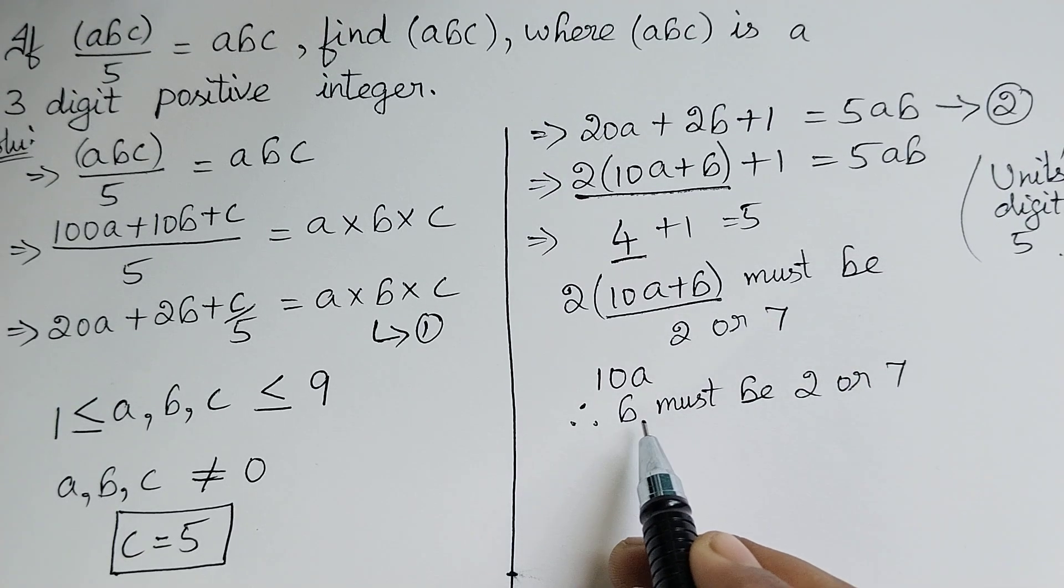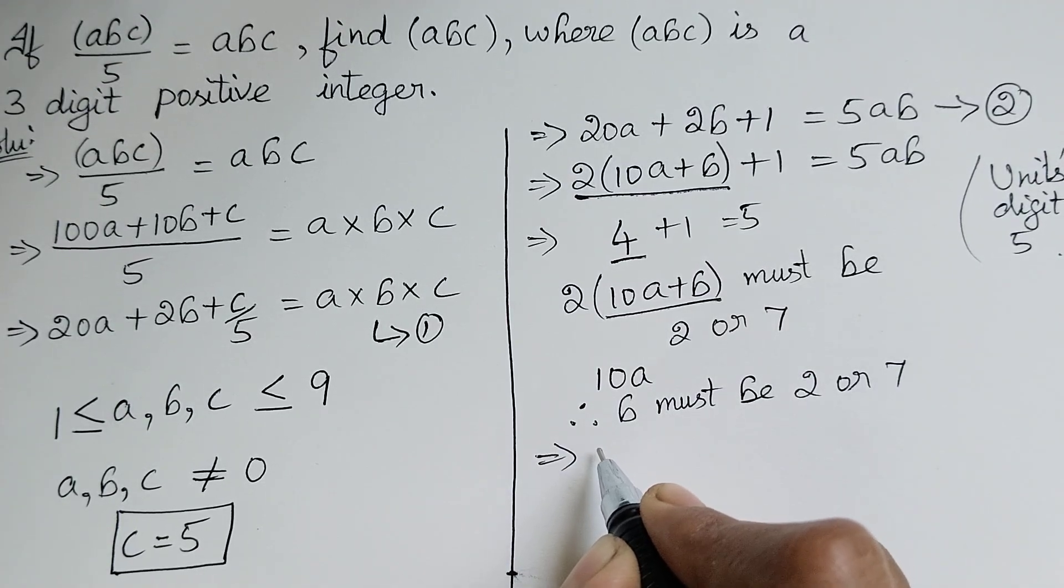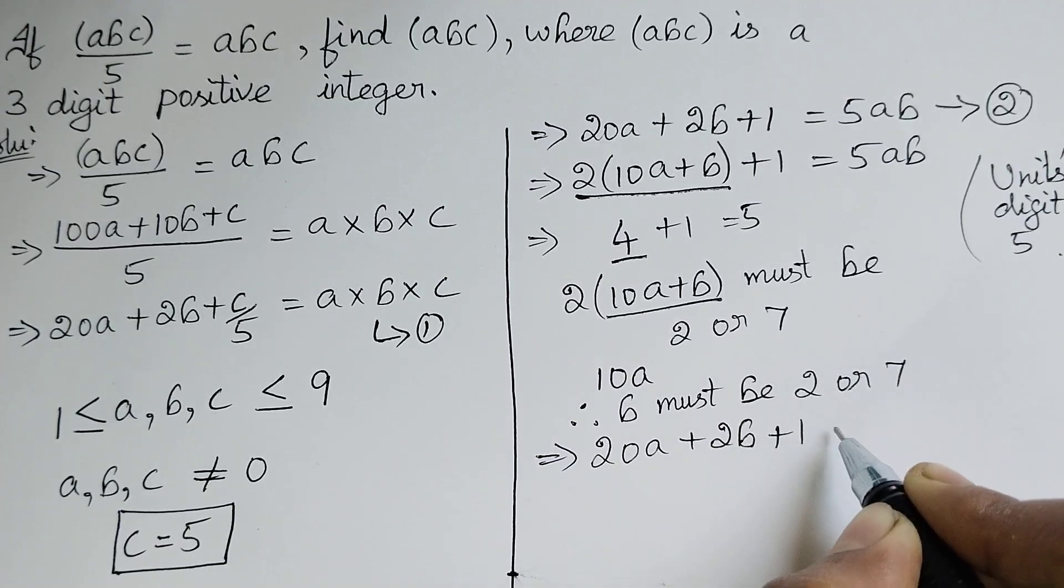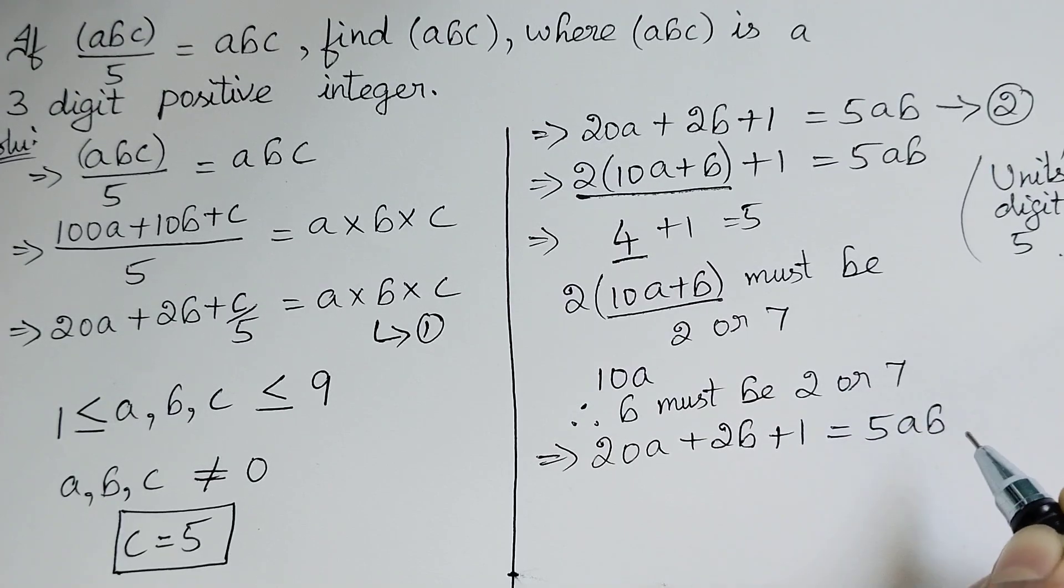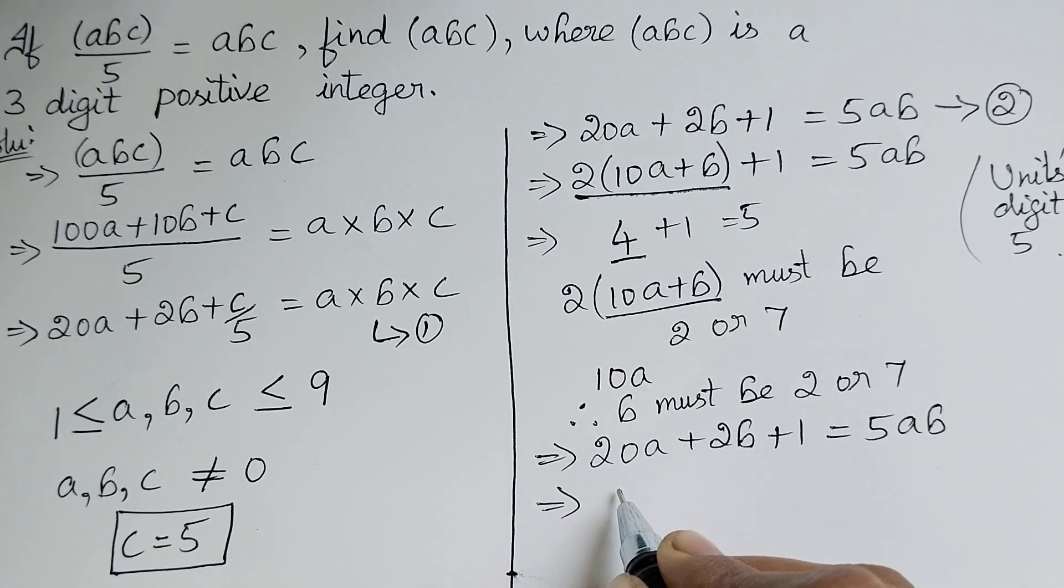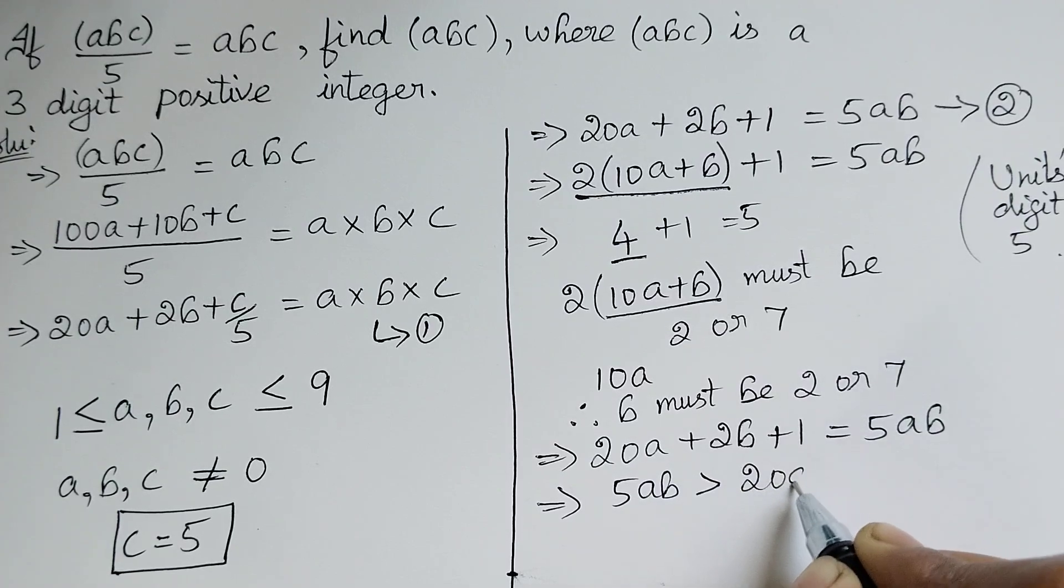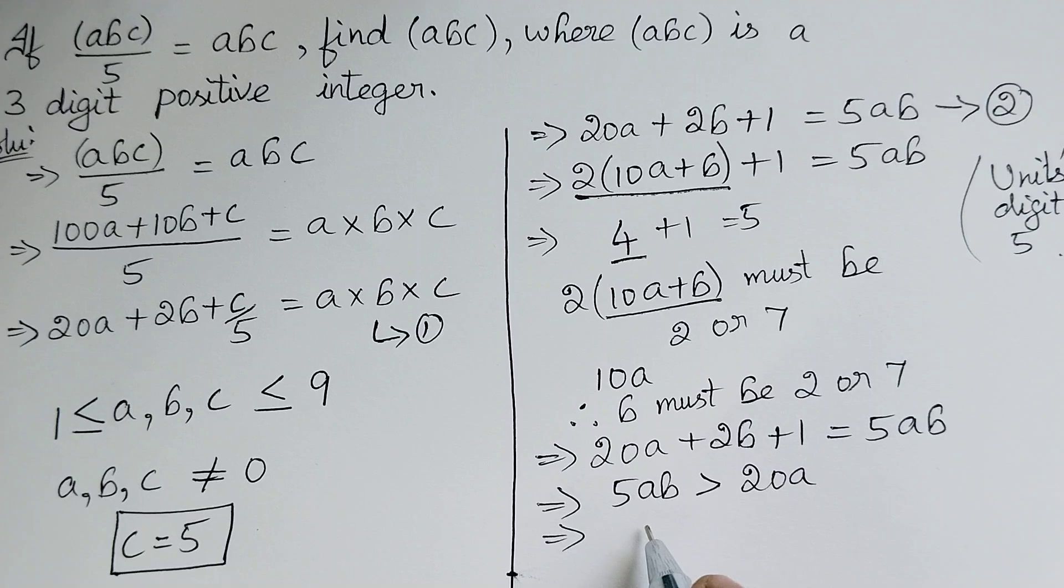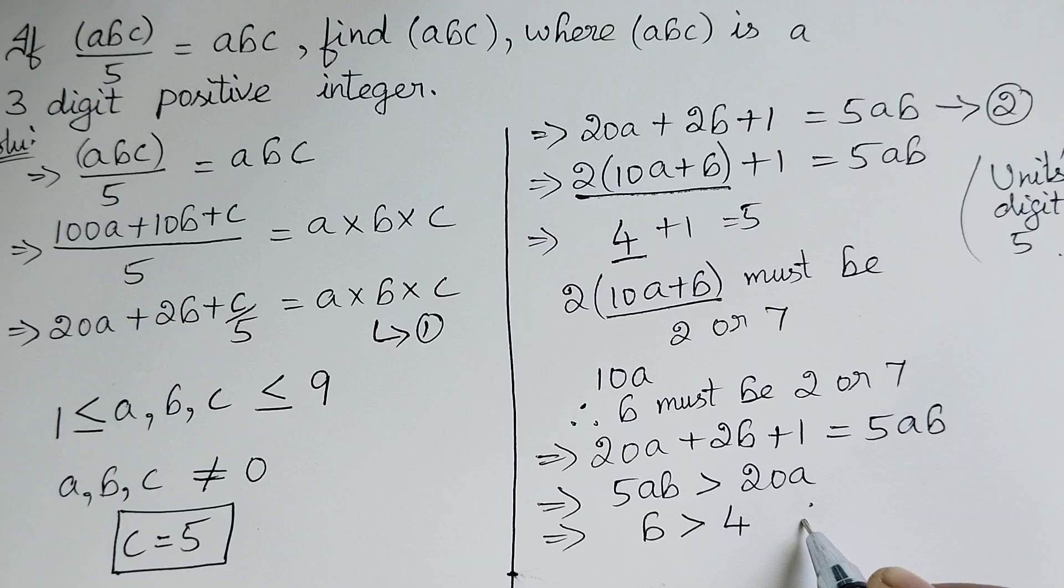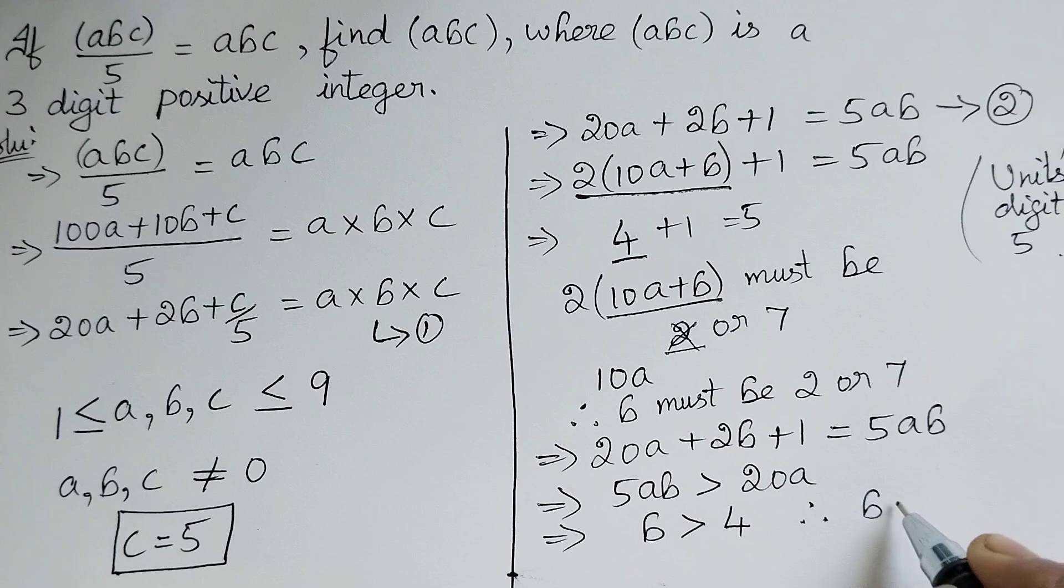To find whether b is 2 or 7, let us take equation number 2: 20a + 2b + 1 = 5ab. Converting this equation to inequality form we get 5ab > 20a. Simplifying this we get b > 4. Therefore b is not 2. b = 7.